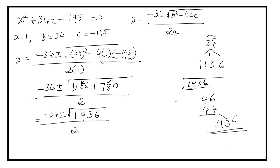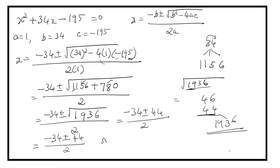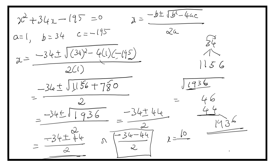44 is the square root of 1936. So we get minus 34 plus or minus 44 upon 2. That is equal to minus 34 plus 44 divided by 2, or minus 34 minus 44 upon 2. The second is not possible because the answer comes as a negative value. So, minus 34 plus 44 equals 10, divided by 2 gives 5. In 5 years the product of their ages is 480.